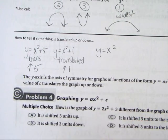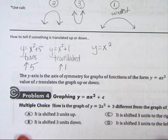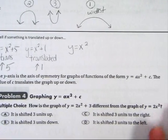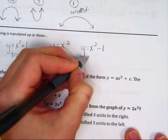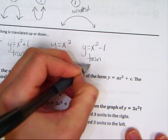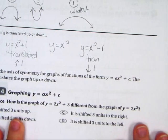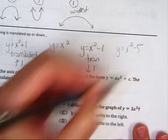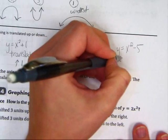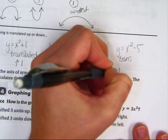Now, you want to translate it down. Guess all you have to do? Instead of adding, subtract. So, y equals x squared minus 1 would translate it down 1. And if you add, like, y equals x squared minus 5, that's going to translate it down 5.